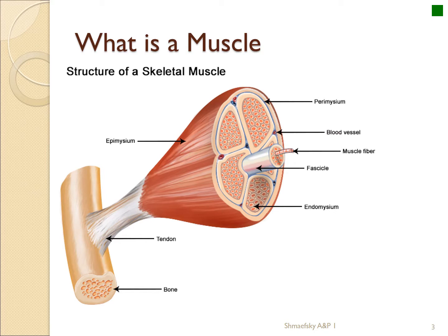A muscle is actually an organ made up of tens of thousands of individual cells for an average muscle. The terminology is a little unusual — when we talk about a muscle cell, they actually call it a fiber, because in the old anatomy days, when people were dissecting and looking at muscles under microscopes, the cell itself looked like a fiber. So this is called a muscle fiber.